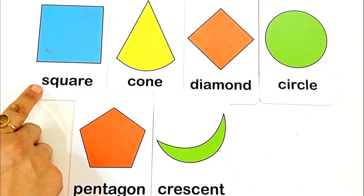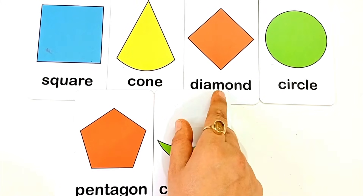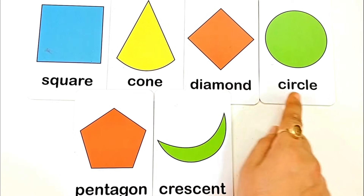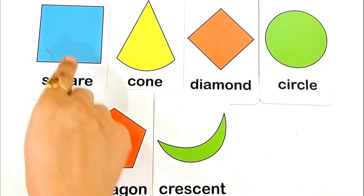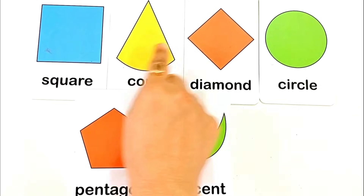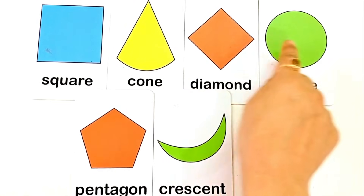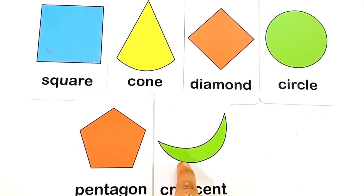Square, cone, diamond, circle, pentagon, crescent. Blue color, yellow color, orange color, green color, orange color, green color.